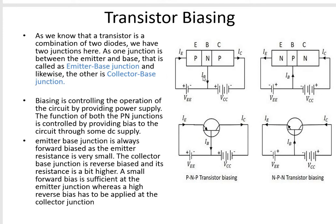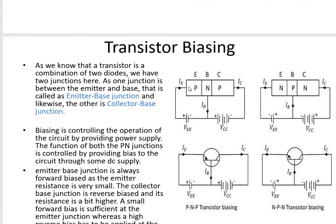A small positive potential or small voltage is needed to make the emitter-base junction forward biased. The currents are denoted as IE for the emitter current, IB for the base current, and IC for the collector current. The input forward voltage is known as VEE and the reverse output voltage is VCC.